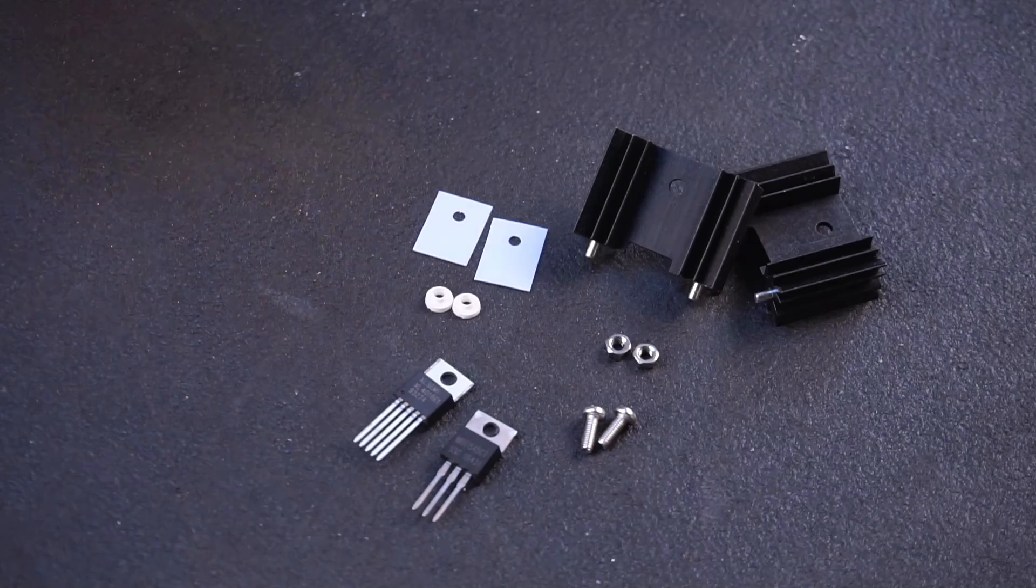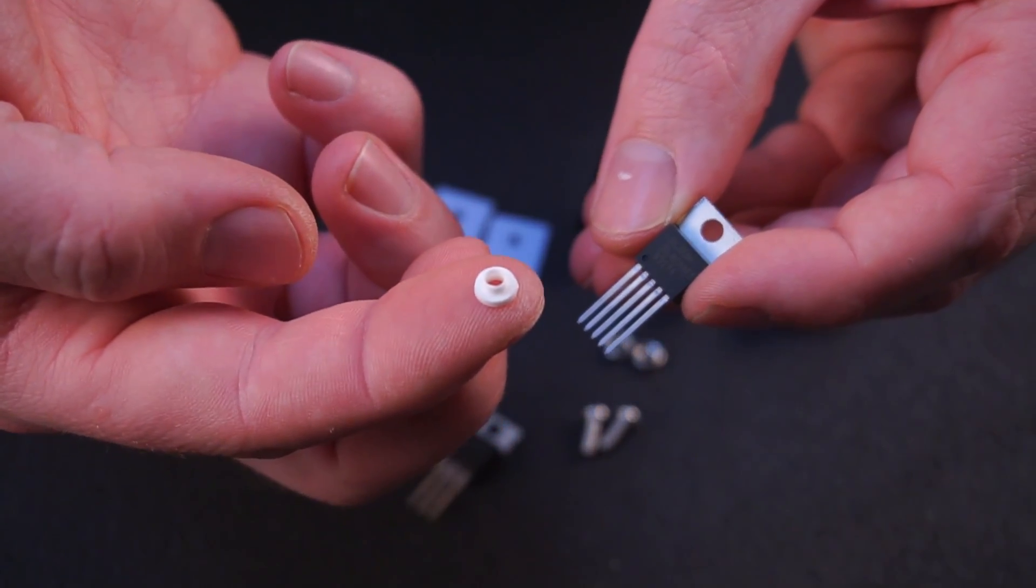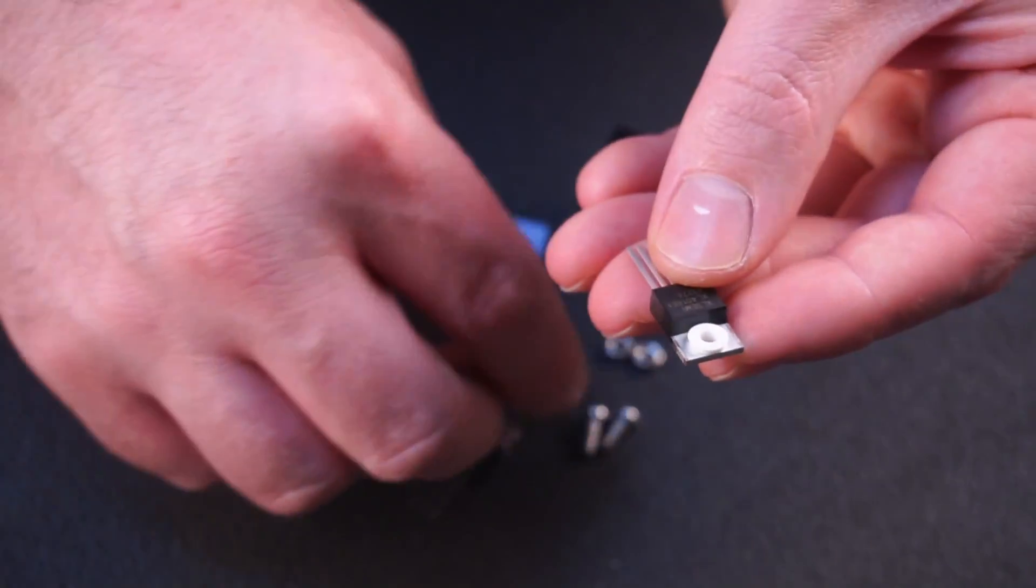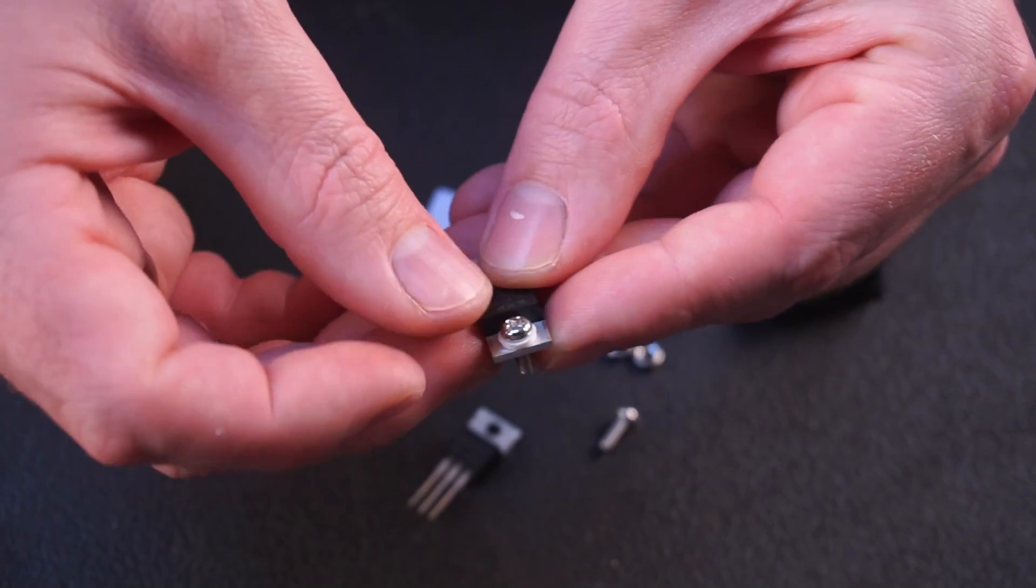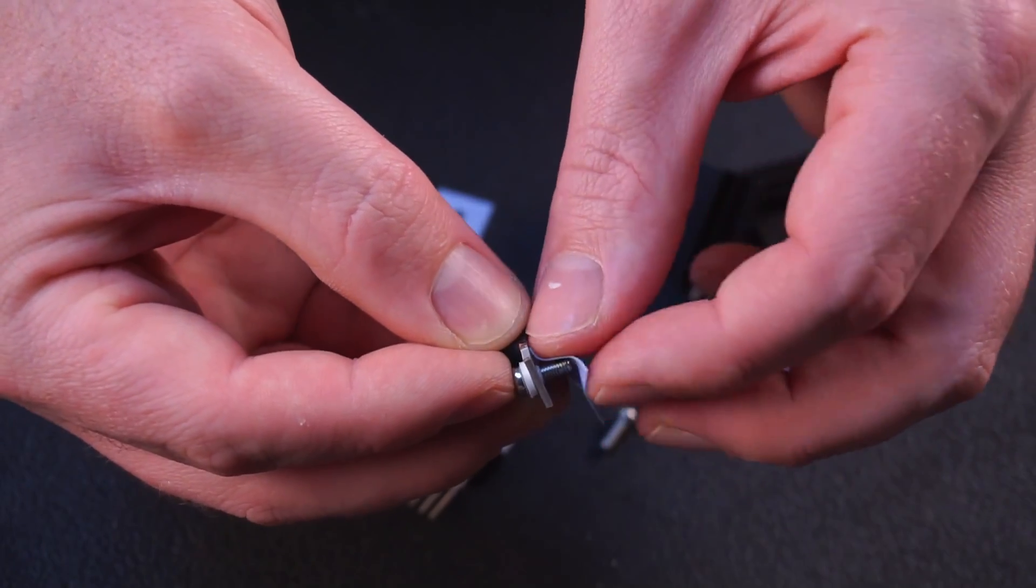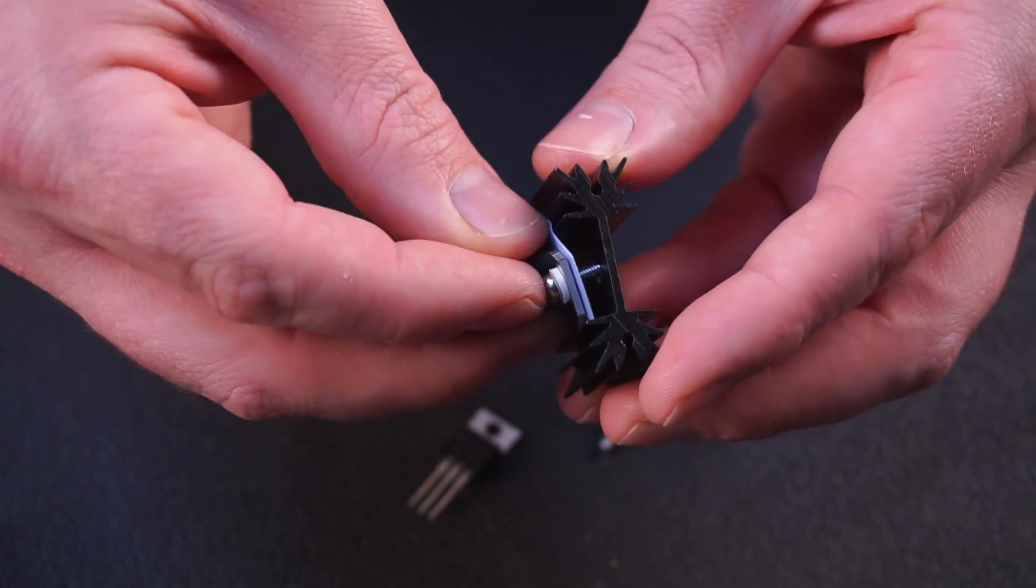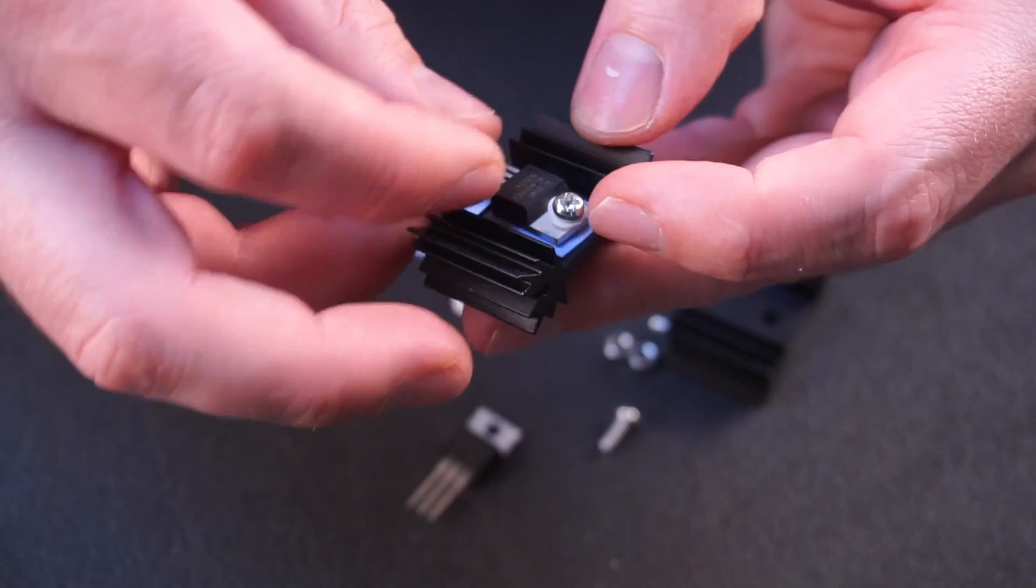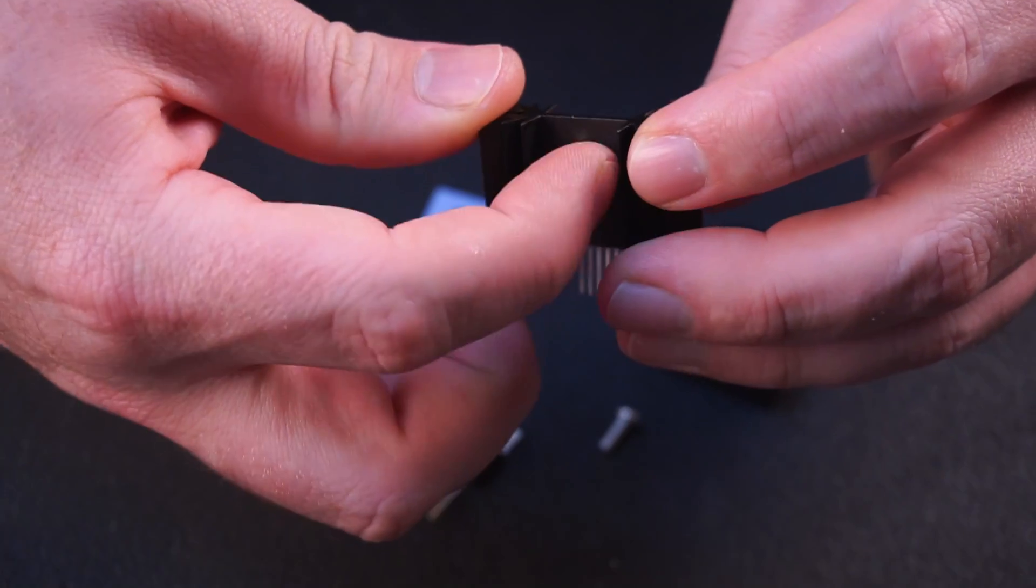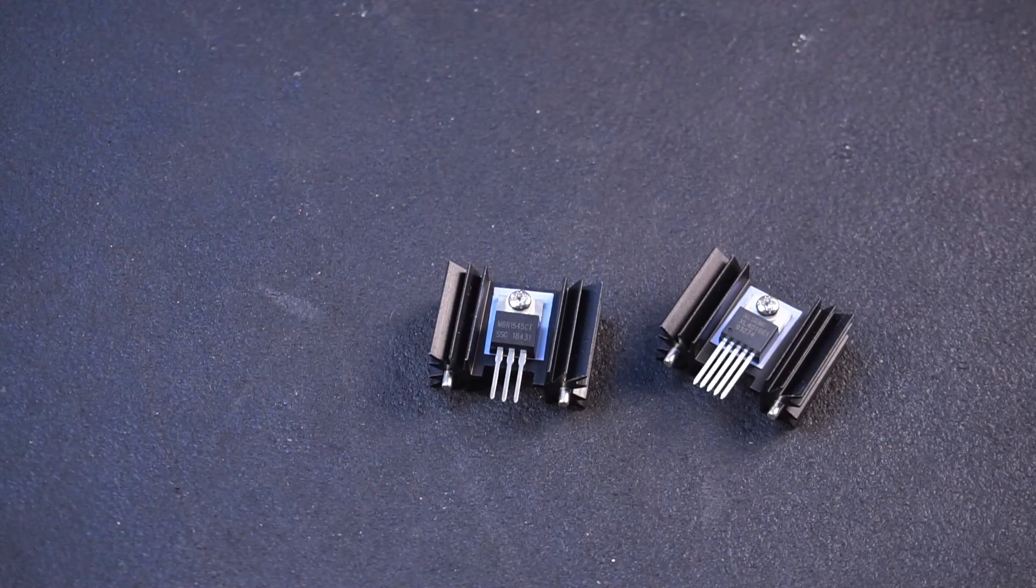Now we can assemble the buck IC and dual Schottky diode to their heatsinks using the included hardware. First take the plastic insulator and install it in the IC like this. Then insert a screw and install a thermal pad on the back of the IC. You can now install the IC onto the heatsink like this. And lastly install a nut on the back. Leave the nut loose for now as it makes lining up the pins later much easier. And repeat this process for the dual Schottky diode as well.